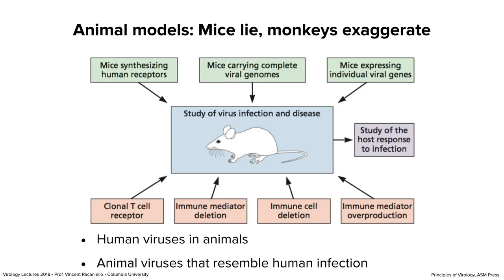What kinds of animal models can we use? We use mice a lot because they're easy to breed and we can genetically manipulate them, but they don't work for every virus. Here are some examples of how you can make a mouse a surrogate for a human virus infection: you can give mice genes encoding human receptors for viruses, put the whole viral genome into mice (as done for hepatitis B virus), or put individual viral genes in and see their effects. Then you measure disease, host response, and immune responses.